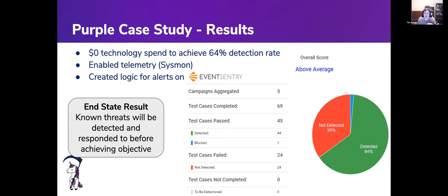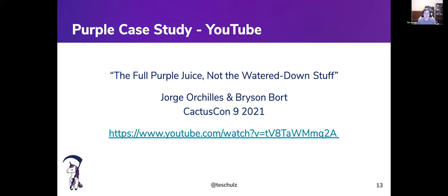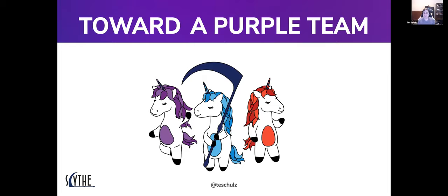By week six, we enabled Sysmon — a free tool from Microsoft for data collection — and wrote detections for EventSentry, the SIEM deployed there. EventSentry also released a blog post as a result. We increased detections from essentially zero to 64% in six weeks, with measured results on what was detected, what was blocked, and a focus on behaviors. That's the power of purple teaming.